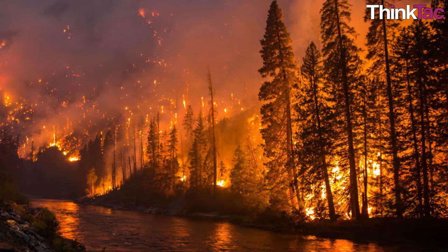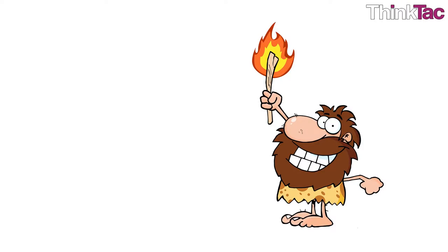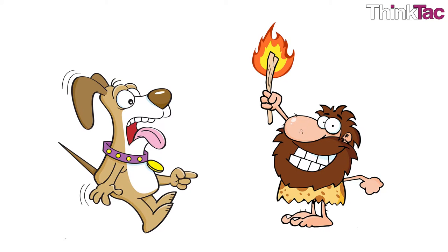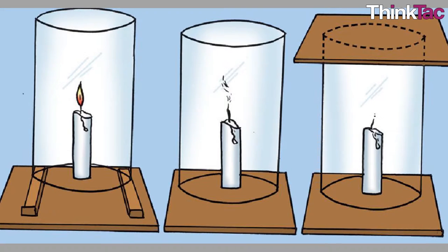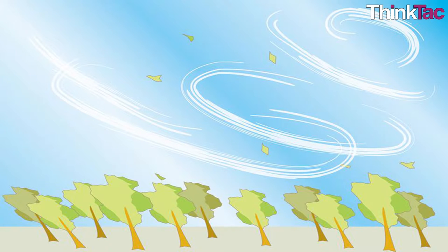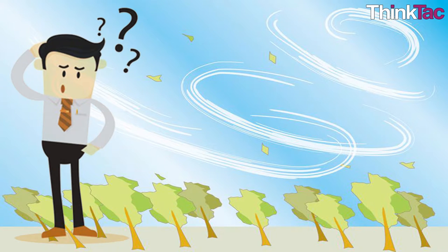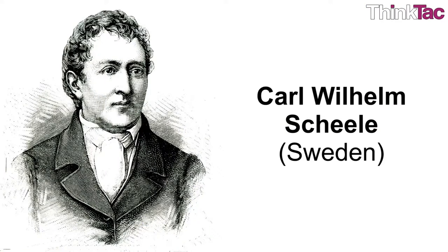Combustion is among the earliest chemical reactions noticed by human beings, in the form of forest fires. The ability to create and control combustion gave human beings power over other animals. But it was not until many centuries later that we could understand the science behind combustion. Combustion is one of the easiest processes by which we can show the presence of oxygen in air; however, hundreds of years ago the composition of air was still unknown.